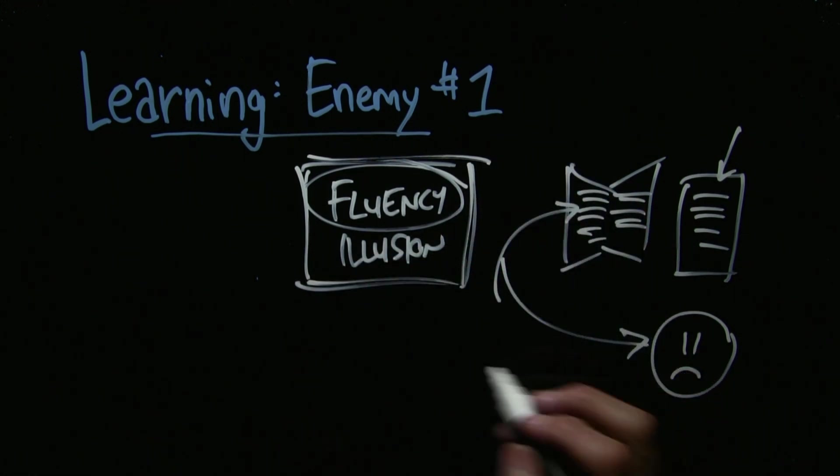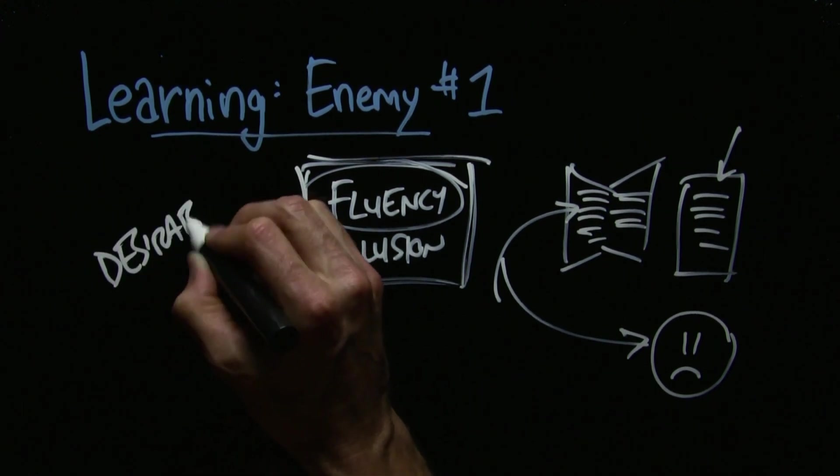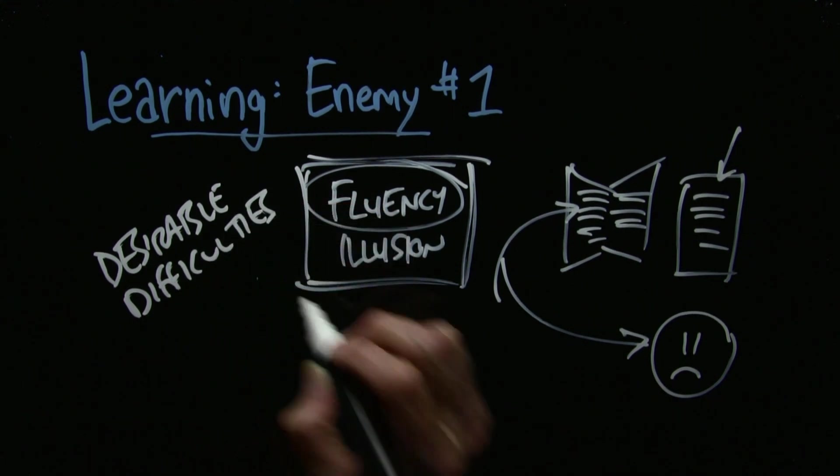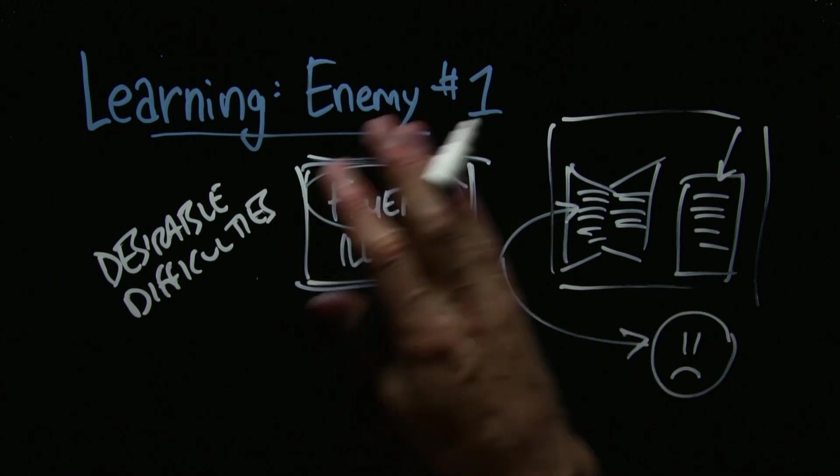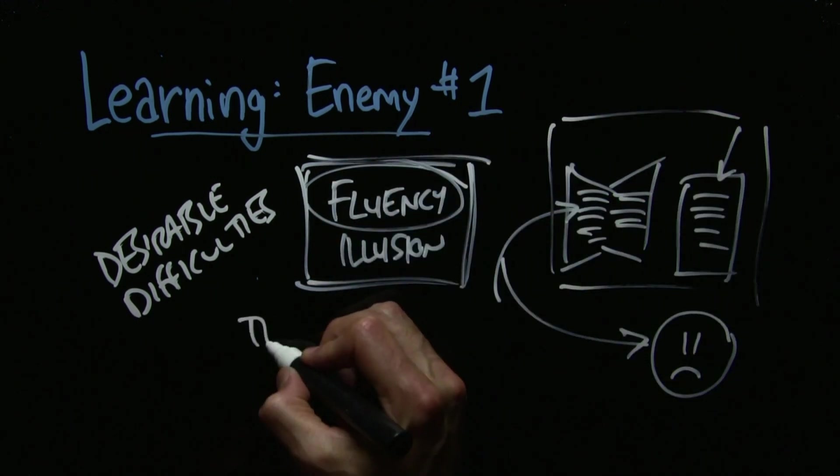What we need to do is introduce what researchers call desirable difficulties. We need to make it harder. So the idea in this scenario would be take your books and take your notes, close the book, get rid of the notes, and then test yourself.